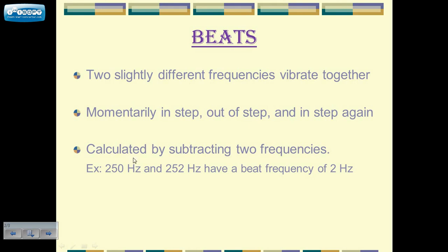To calculate beats, you simply subtract the two frequencies. So, in my example here, you have 250 and 252 hertz. You subtract them from each other and get two hertz. So, the closer the frequencies are together, the lower the beats are.